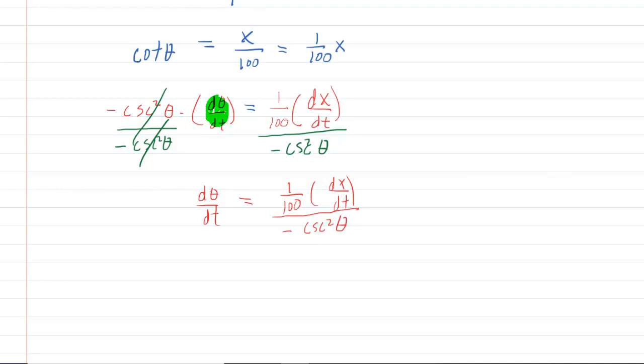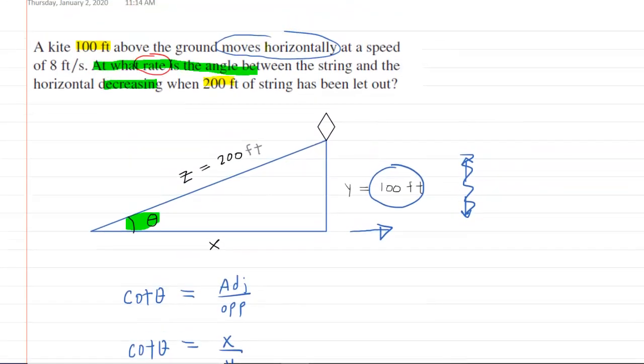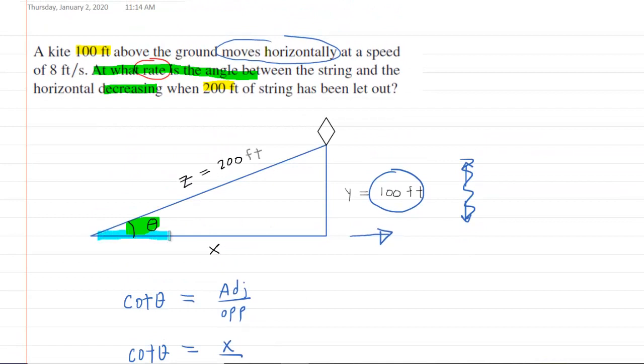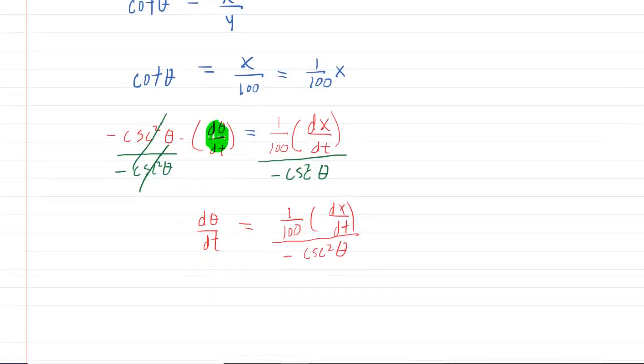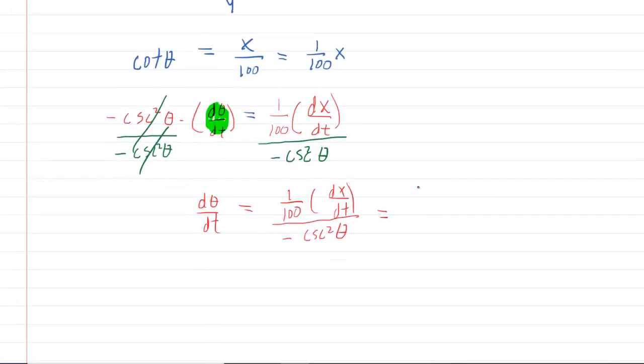Now we just have to fill in the known values, and we will have our answer. dx dt would be the rate at which x is changing. We were told that the rate at which x was changing was eight feet per second. That's how fast the kite was moving horizontally, and so that's how fast x is changing. It's increasing at eight feet per second.